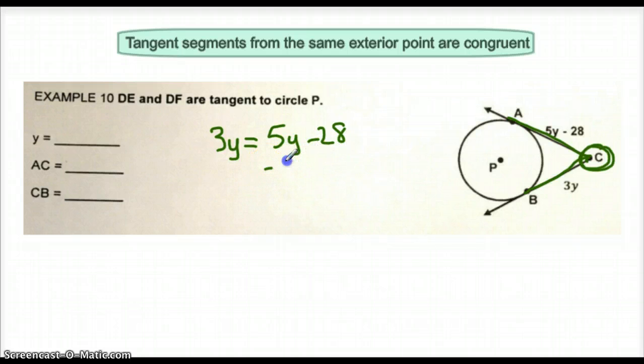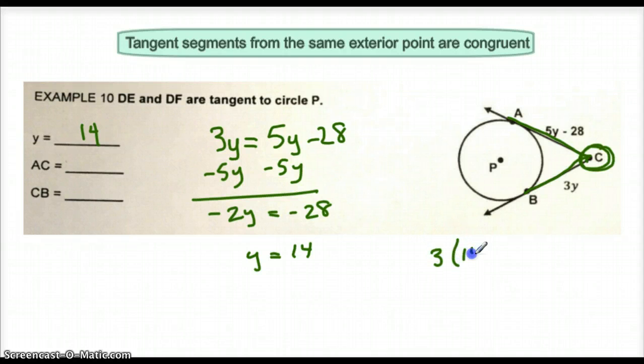We subtract 5Y. We have negative 2Y is equal to negative 28. So therefore, Y has to be 14. If Y is 14, then to solve for the length of BC, we would just do 3 times 14, end up with 42. And so therefore, AC has a length of 42 and CB must also have a length of 42.